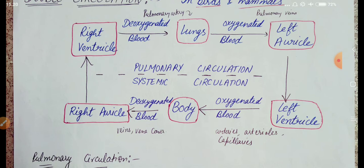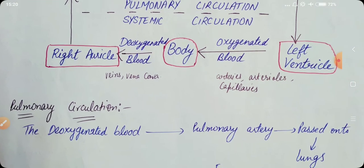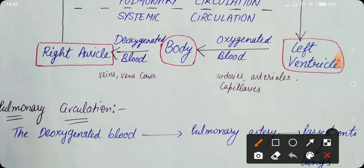Next one is systemic circulation. Systemic circulation क्या है? Left ventricle में oxygenated blood होता है। यह oxygenated blood, with the help of arteries, arterioles, and capillaries, body में enter करता है।